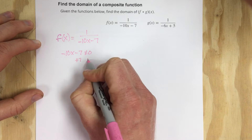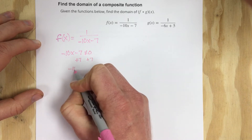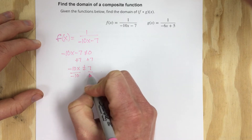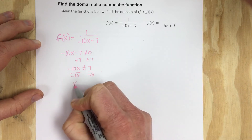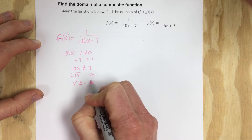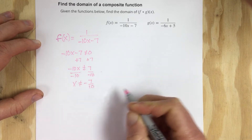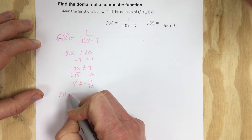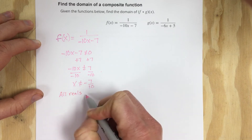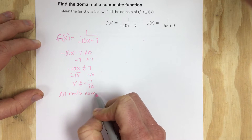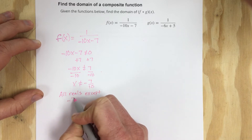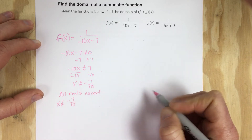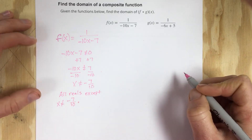I'm going to add 7 to each side, so that's negative 10x not equal to 7. Then we divide by negative 10, and we get x not equal to negative 7 tenths. So the domain of f of x is all reals except negative 7 over 10.